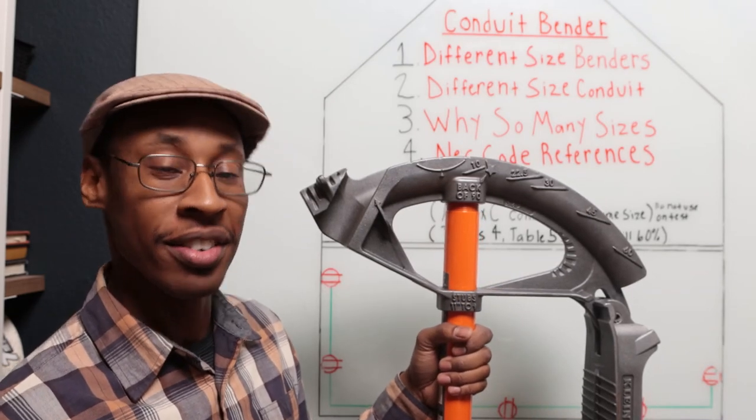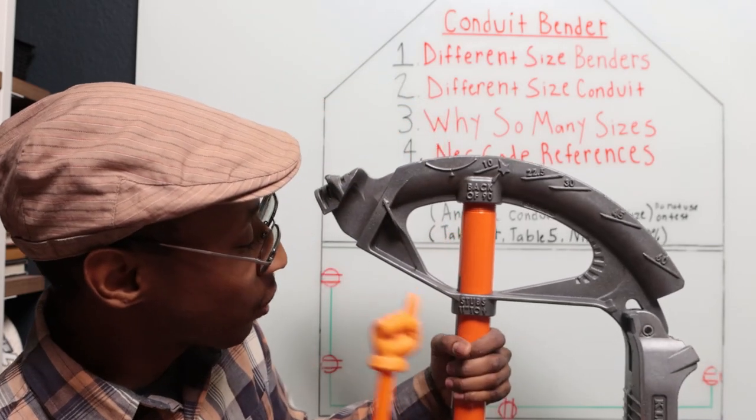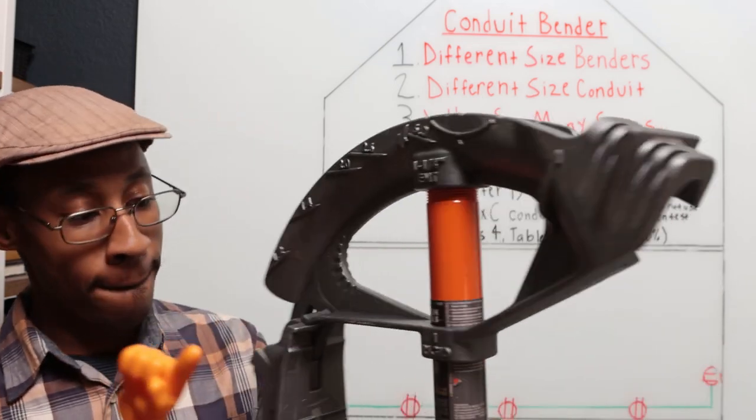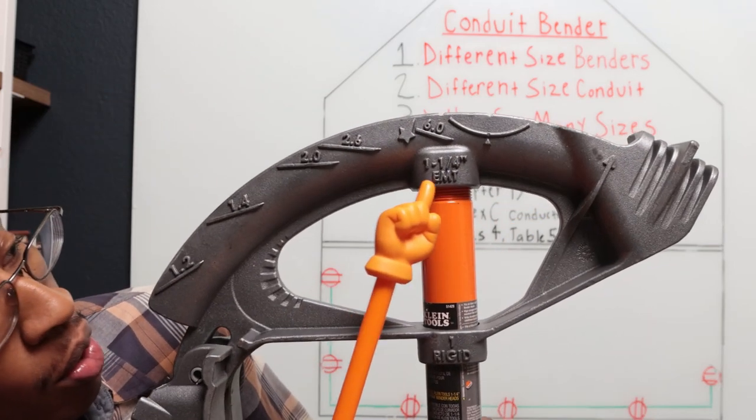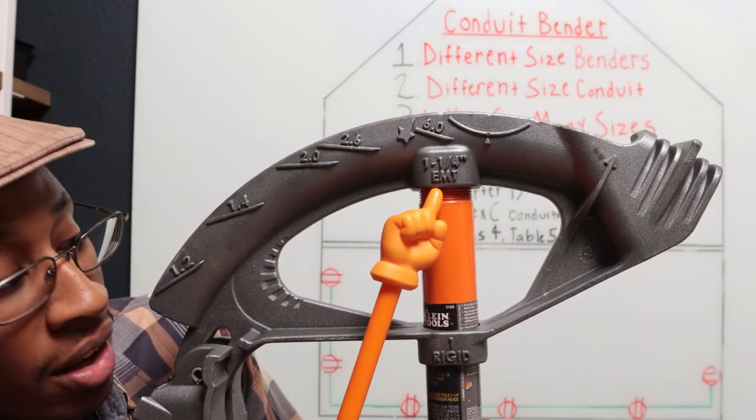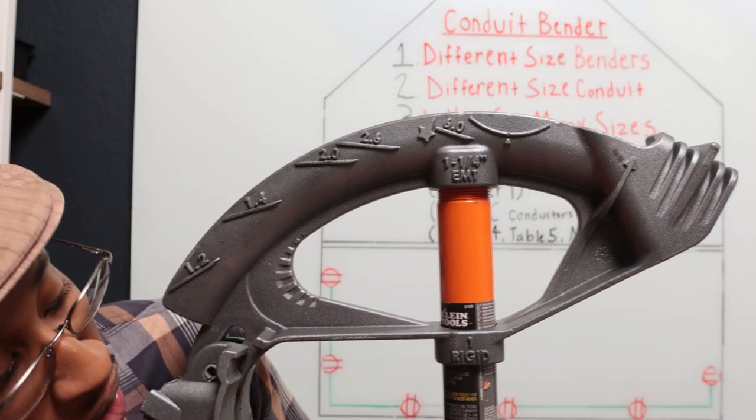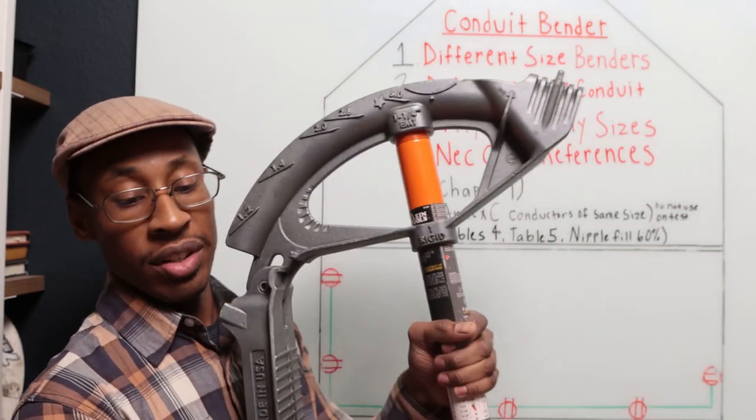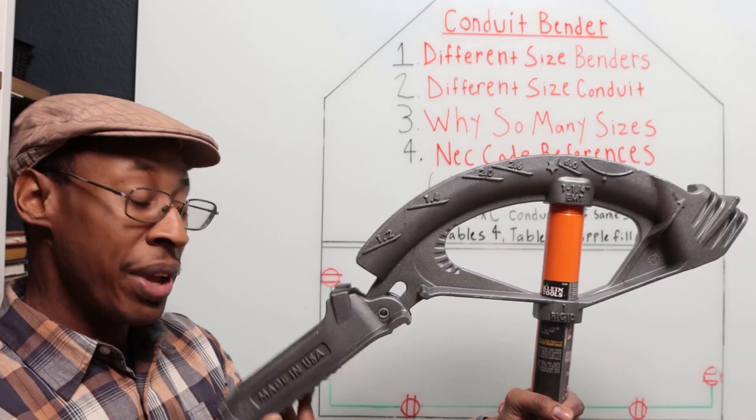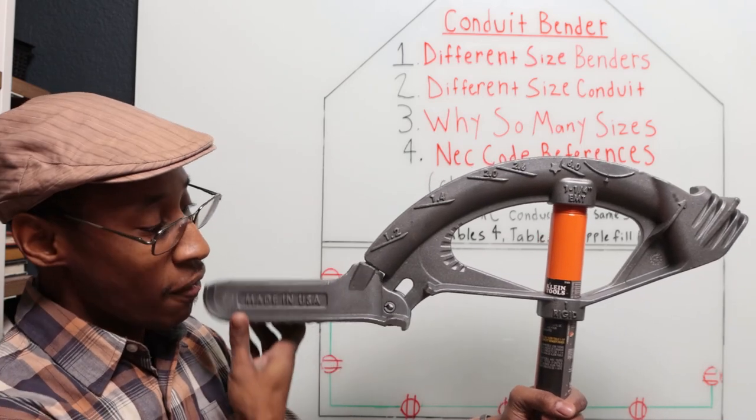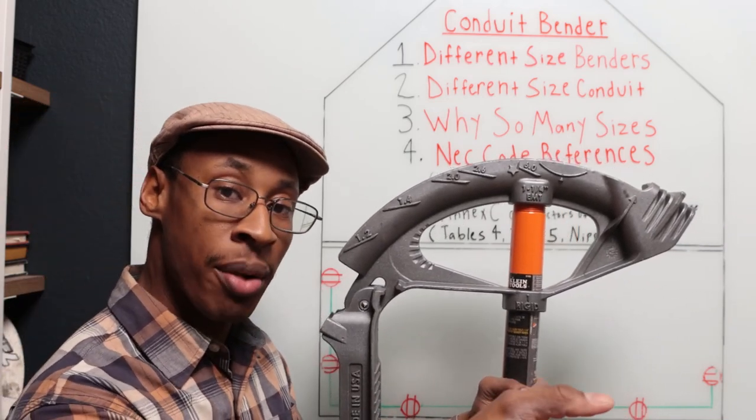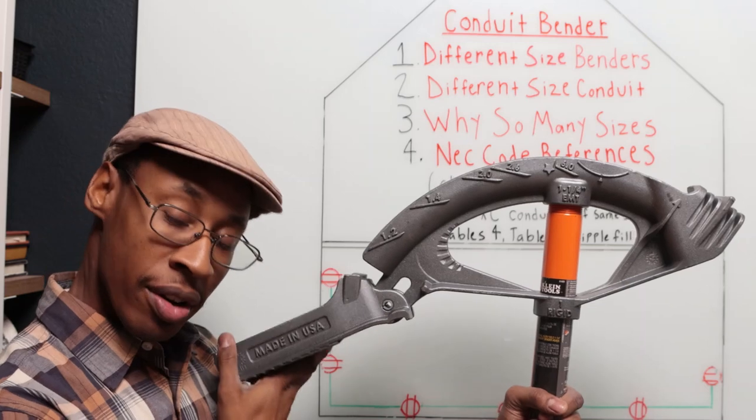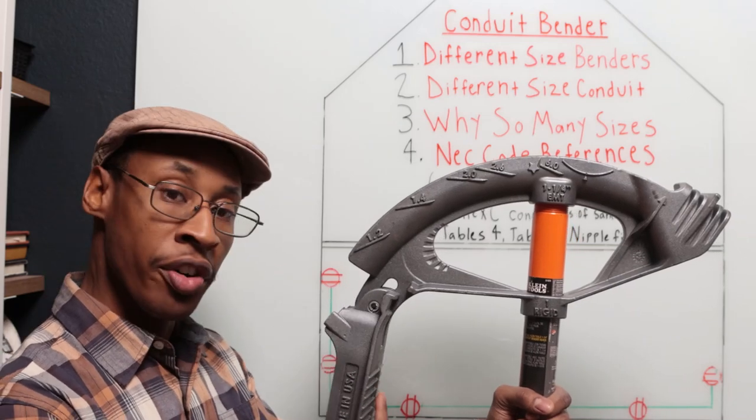This is a big bender. So this one here is going to be for one and a quarter EMT conduit and also one inch rigid. Now this one has an extra little piece on it, even though the other ones have it built in. So this is a two piece. So you have this one shoe. Then you have your foot, your footstep.